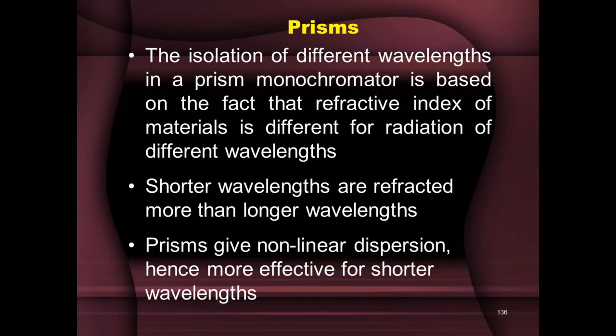When you have a particular wavelength lambda 1, it will refract at angle theta 1. A different wavelength lambda 2 will refract through the same prism at a different angle theta 2, so theta 1 differs from theta 2. Since the angle of refraction is different, the refractive index of the material is different for different wavelengths. Shorter wavelengths are refracted more than longer wavelengths, so the angle of refraction is greater for shorter wavelengths. Prisms give non-linear dispersion because different wavelengths are refracted to different extents.